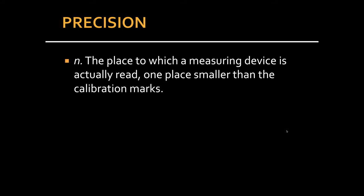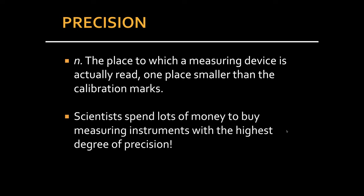We call this precision, the place to which the measuring device is actually read, one place smaller than where it's marked to. And scientists will spend a tremendous amount of money to buy these instruments that have the highest possible degree of precision. And you'll see why when I show you how to round off answers to math problems. Having the highest number of recorded digits is going to give you the best results in your math.